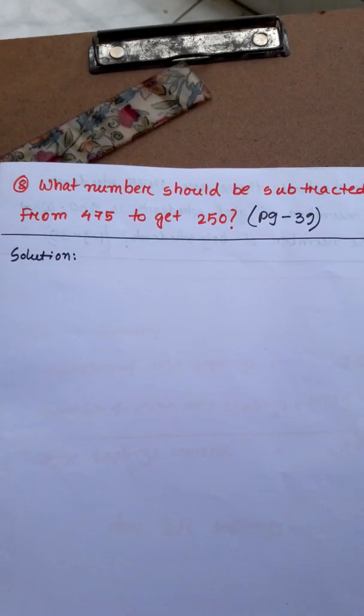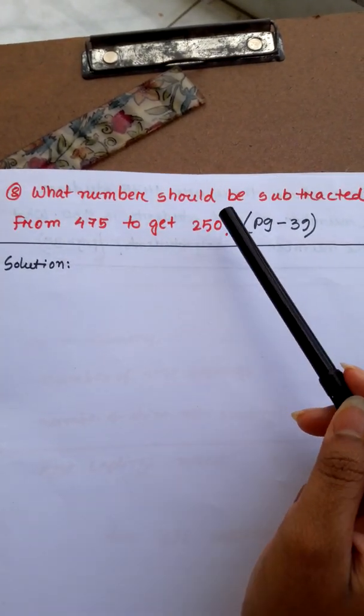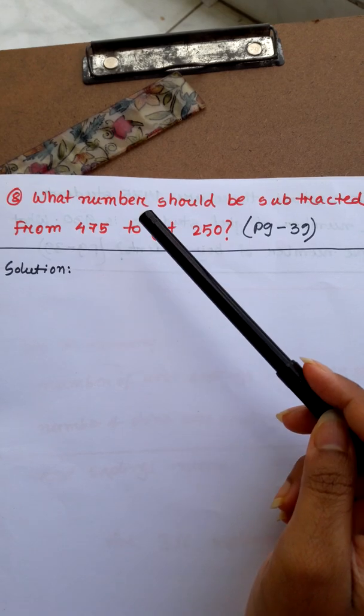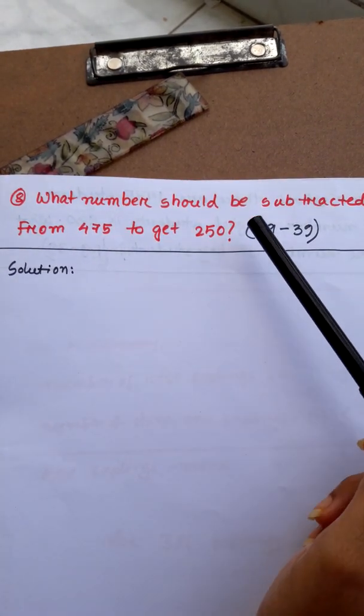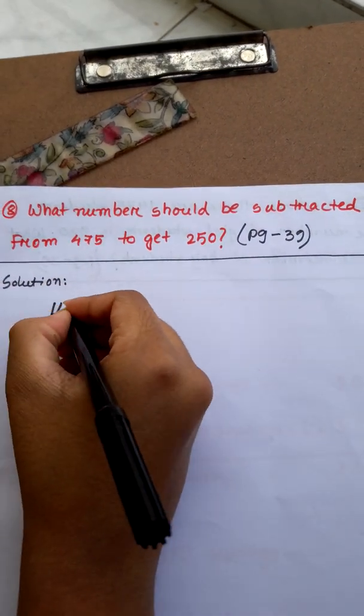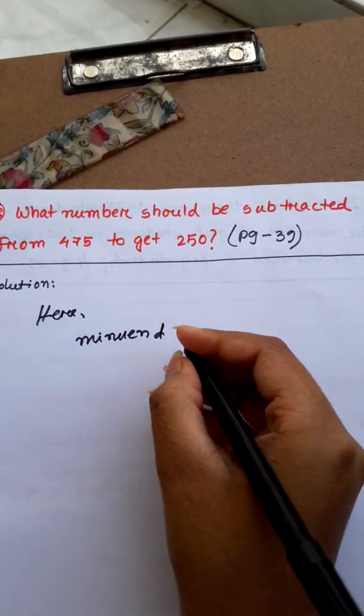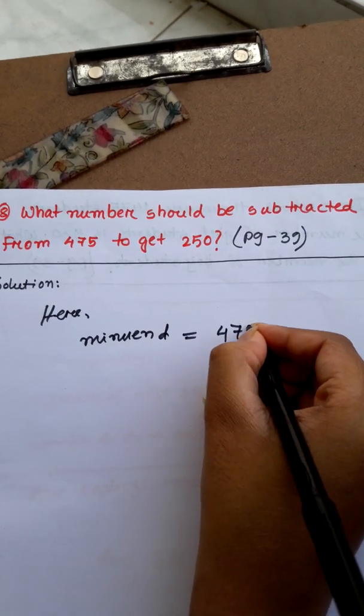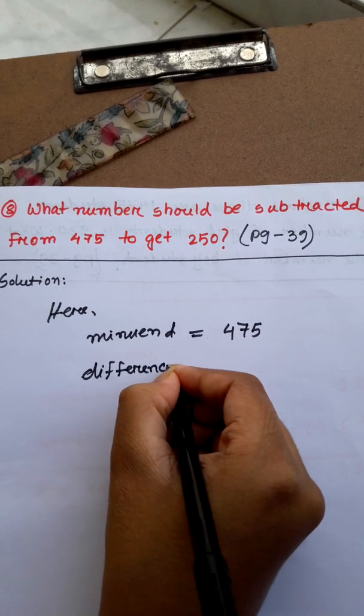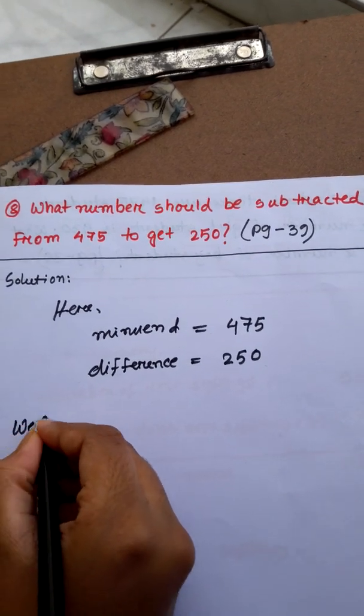Now the last math question is: what number should be subtracted from 475 to get 250? We know minuend is 475 and difference is equal to 250.